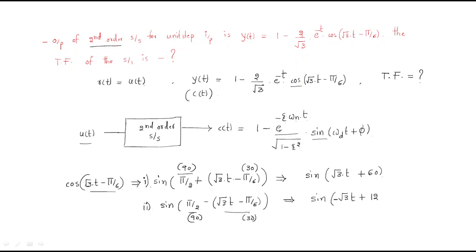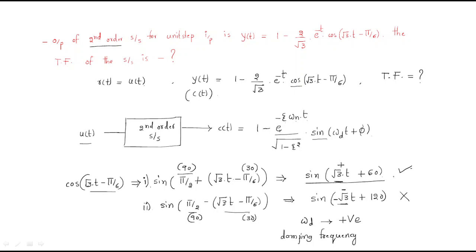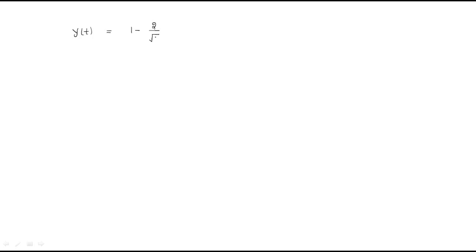Comparing the two cases: the second case gives a negative ωd, but ωd (the damped frequency) must always be positive. Therefore we use the first case. The given output is rewritten as: y(t) = 1 minus (2/√3) e^(−t) sin(√3·t + 60°).